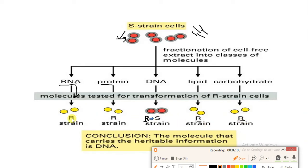So in this test tube, we know that when DNA is entered into the test tube where R-strain was already present, it converts into an S-strain. So here we learn about a phenomenon called transformation. What happens in the transformation?